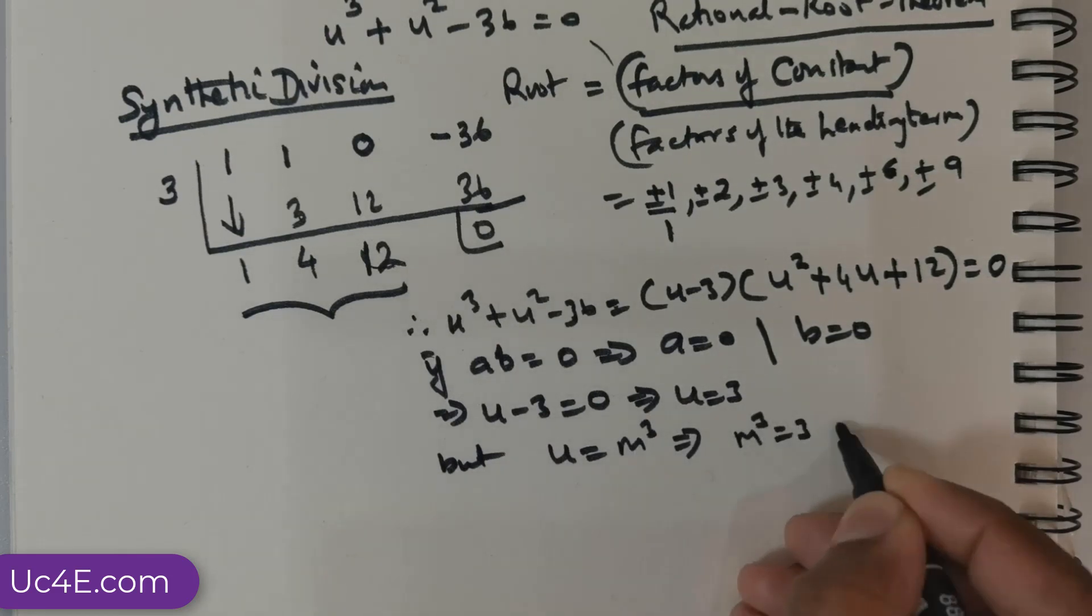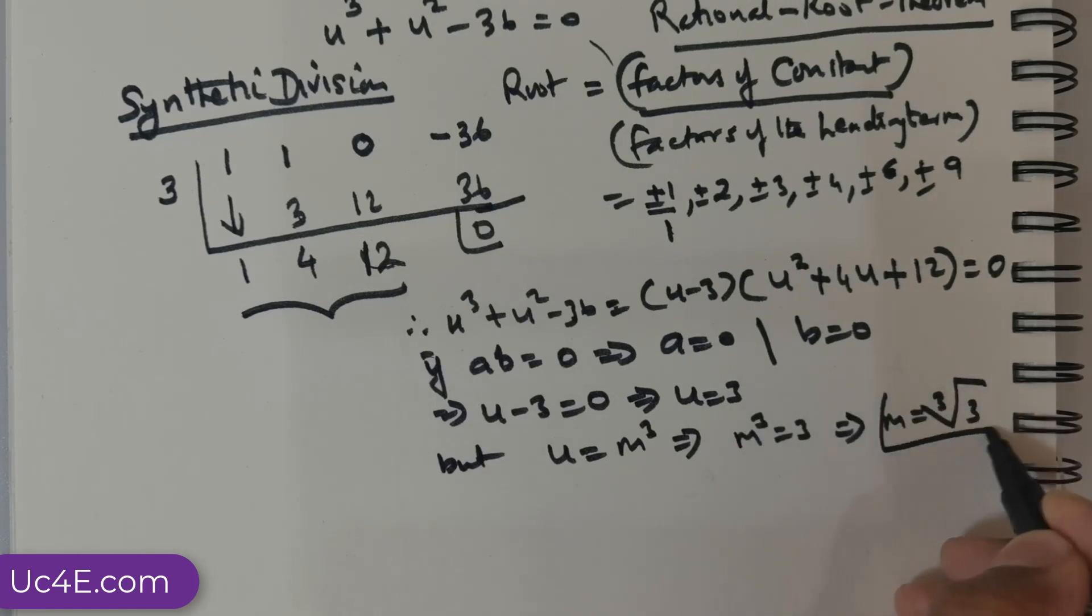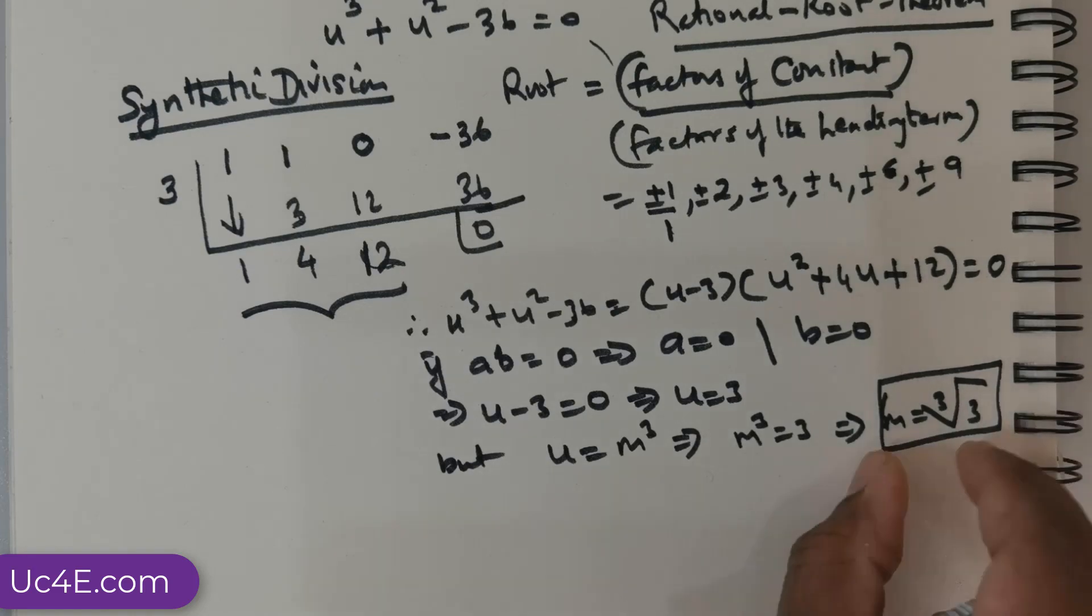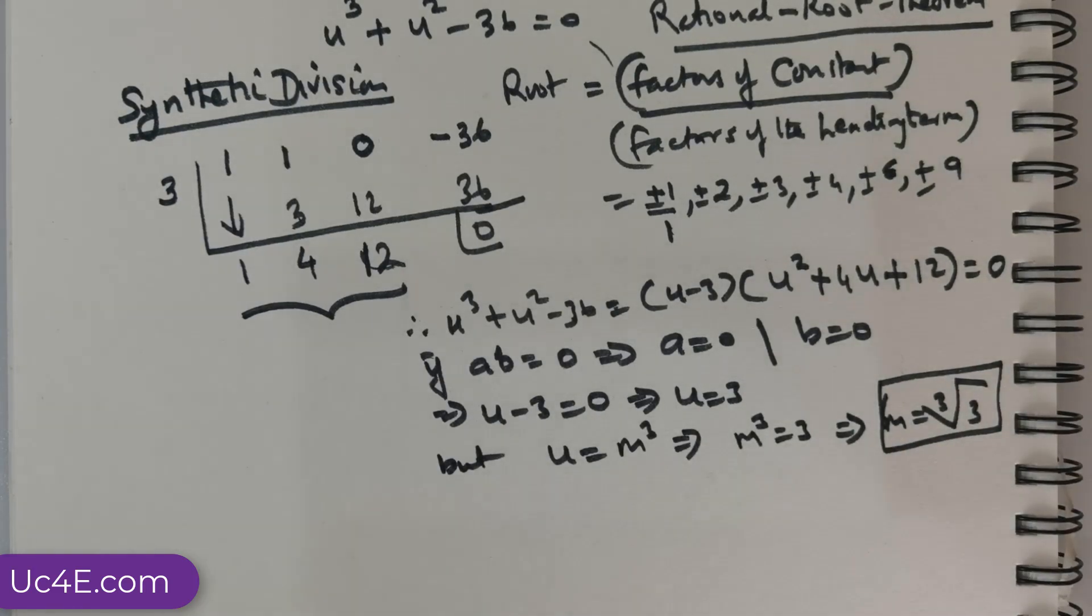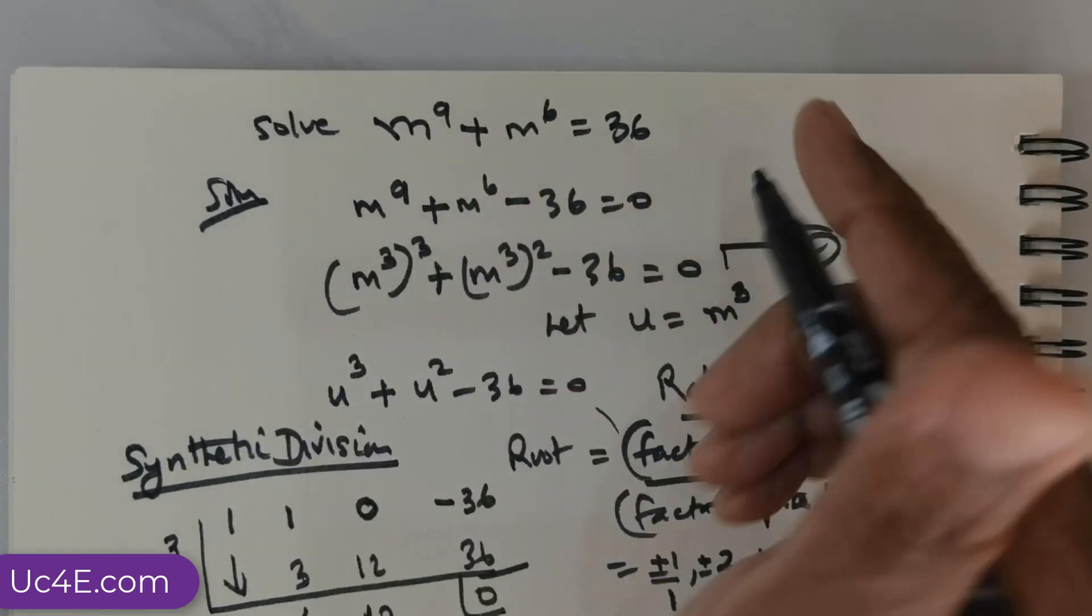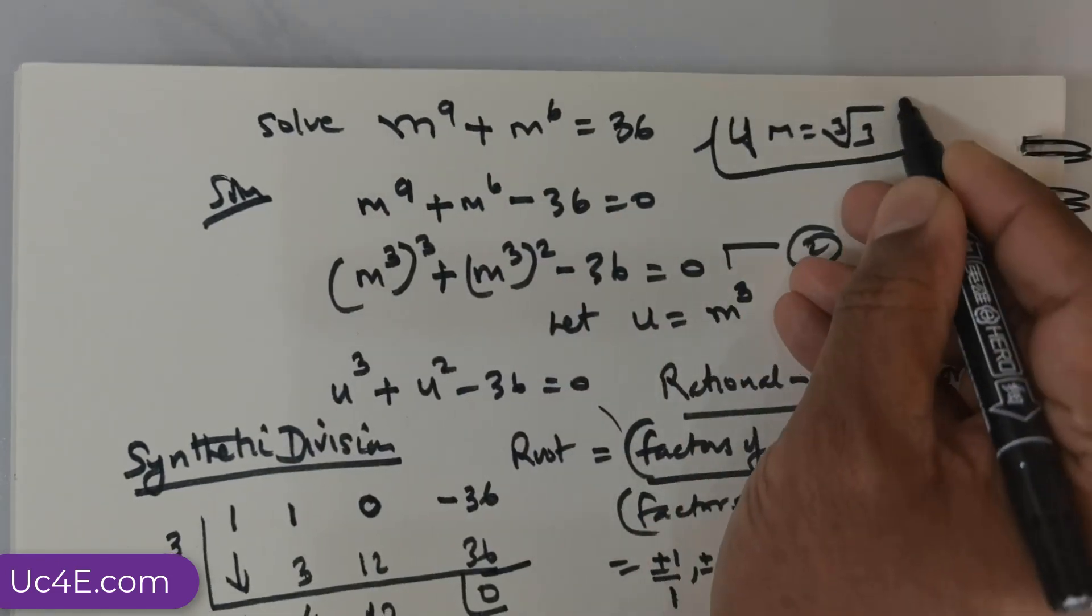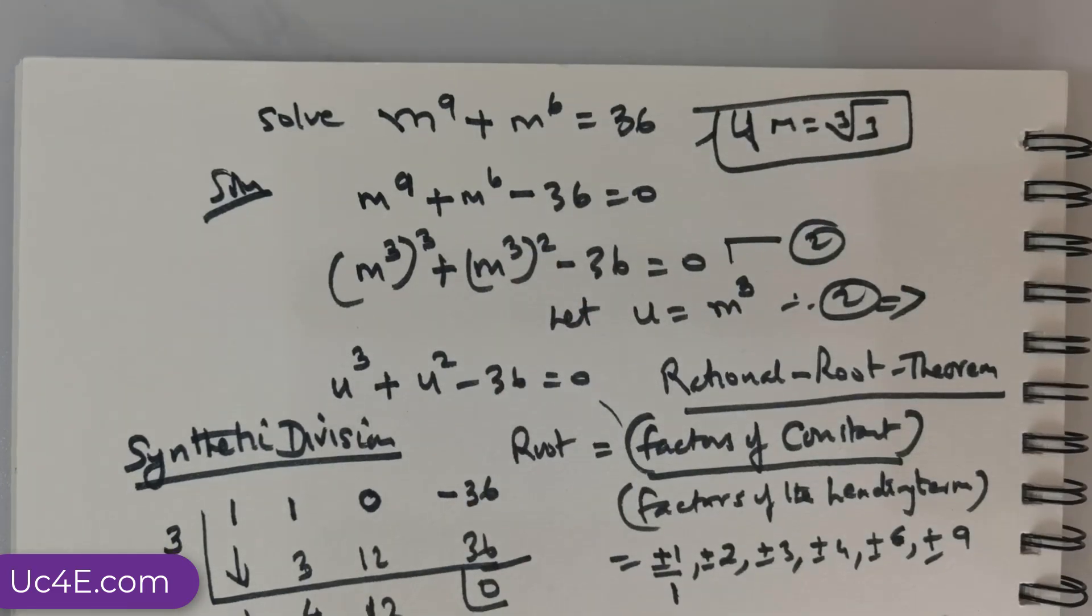But my u is m to the power of 3. So, this would mean m^3 = 3, which in turn means m equals, you push this 3, it becomes third root of 3. So, this is a real root, or I would say a real value for m that solves this system. The system will be solved if m = ∛3. So, that is the solution. So, that is one way you can adopt.